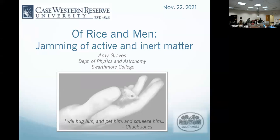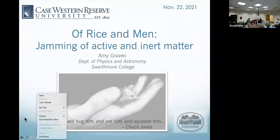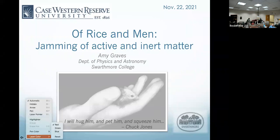Amy Graves comes to us from Swarthmore College, where she is the Walter Kemp Professor in the Natural Sciences. She did her doctoral work at MIT and postdoctoral work at Exxon and Columbia. Amy is a fellow of the American Physical Society and past chair of the APS Division of Computational Physics. She's a computational physicist who works on soft matter, and she also has publications on the subject of gender and science. Amy is a Cleveland native, and she has visited us in the past, but not in a long time, so this was quite due.